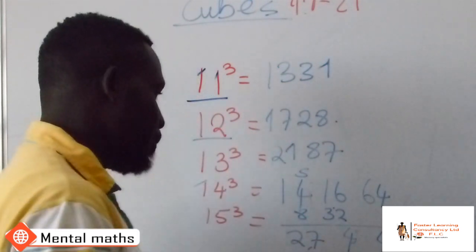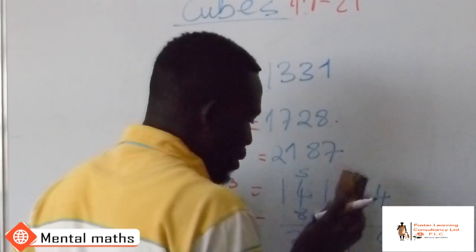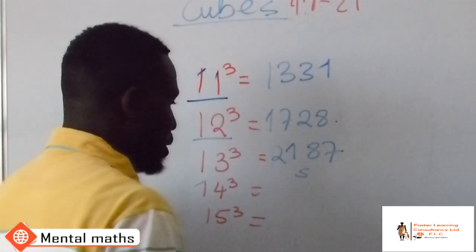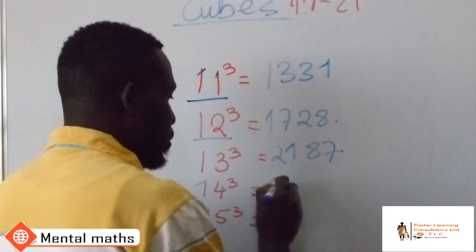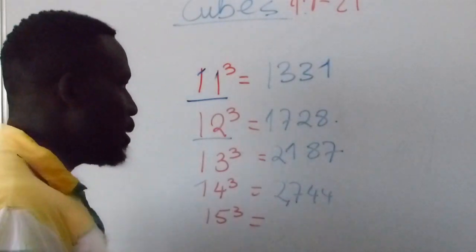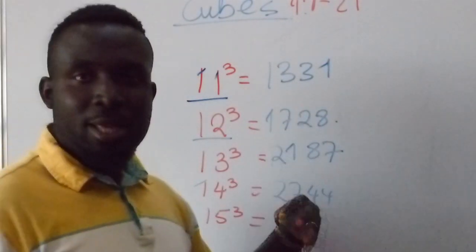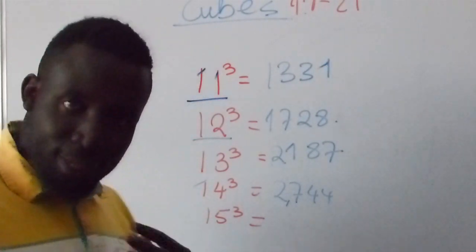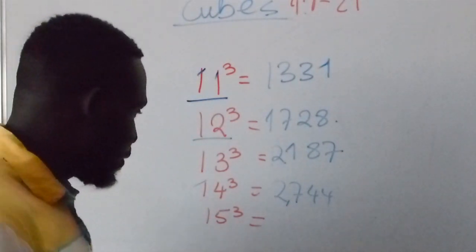So that's what becomes the answer. So this is also another method. 2744 becomes the answer. You see, we are not using the longer method. We are only using the shortcuts on how to get down.